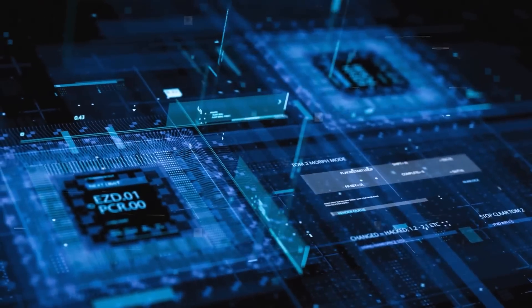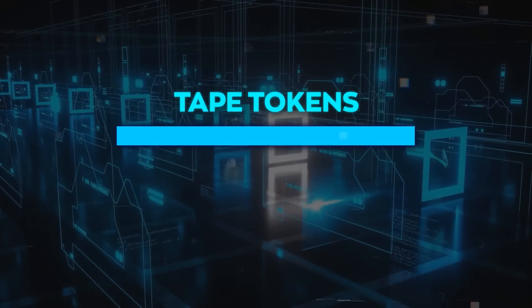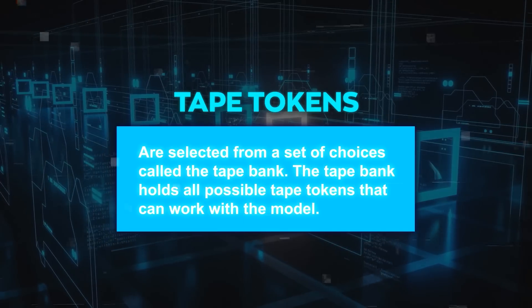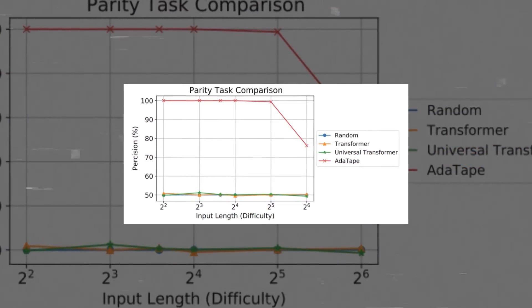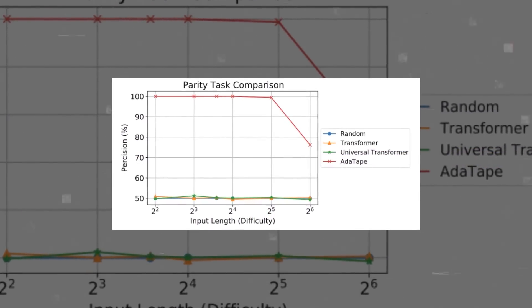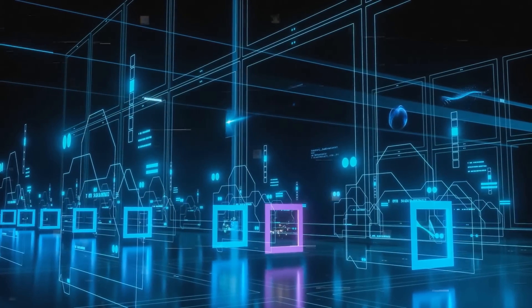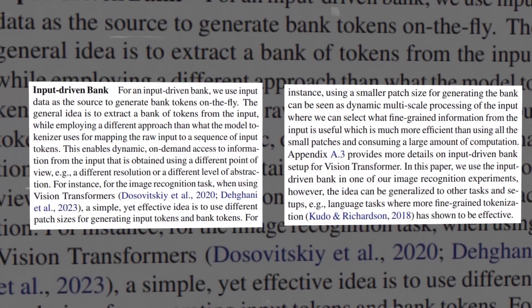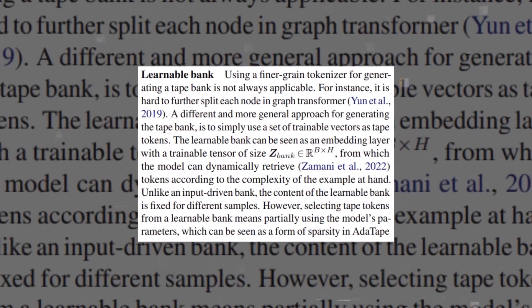AdaTape works with two kinds of tokens: input tokens, which represent basic data like words or pixels, and tape tokens, which are selected from a set of choices called the tape bank. The tape bank holds all possible tape tokens that can work with the model. The system represents each input as a combination of input tokens and tape tokens, changing the number of tape tokens according to the complexity of the input. The model can create the tape bank in two ways: an input-driven bank, which takes tokens from the input using a unique approach, and a learnable bank, which uses trainable vectors as tape tokens.